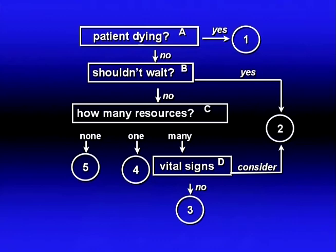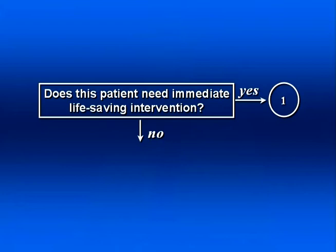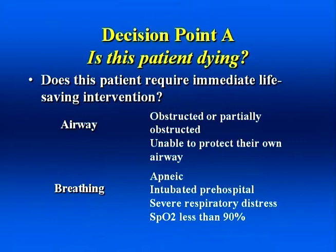A triage nurse needs the knowledge and critical thinking skills to function effectively in this role and rapidly sort patients. An inexperienced triage nurse will make unsafe decisions with any triage system. To understand how ESI works, it is important to first look at the conceptual model of the algorithm. You will notice four decision points: A, B, C, and D. The triage nurse always starts with decision point A: is this patient dying? If the answer is yes, the patient meets ESI Level 1 criteria. If the answer is no, the nurse moves on to decision point B. The criteria used to answer this question are: does this patient require immediate life-saving interventions?